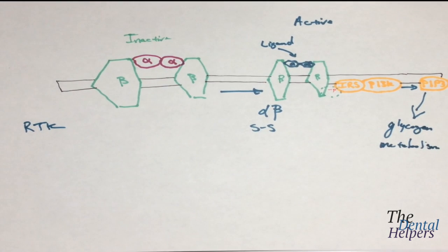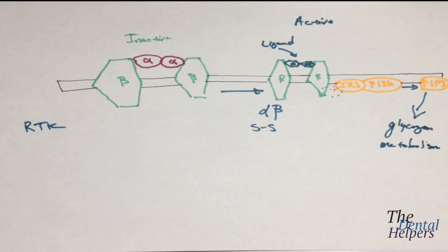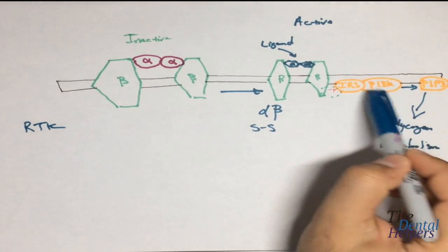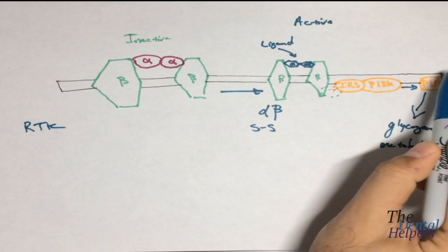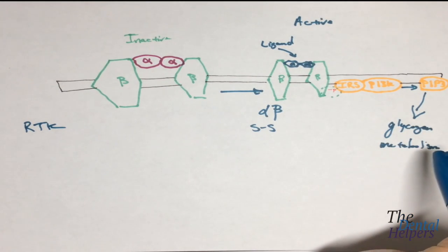And so as you probably guessed, if we're metabolizing glycogen, we want to produce or have more sugar in the body. And as we saw in the RTK video, this PIP3 is basically converting PIP2 into PIP3, and this is leading to glycogen metabolism.